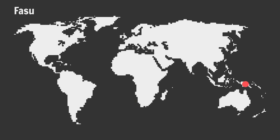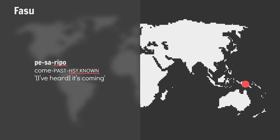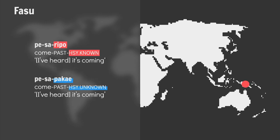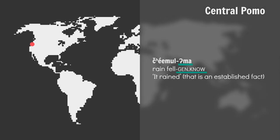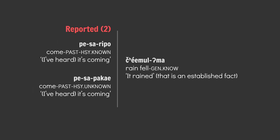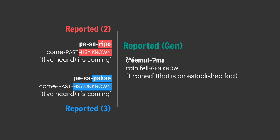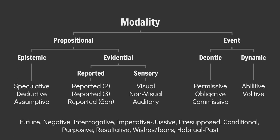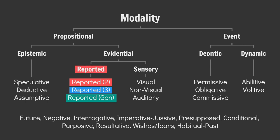In FASU, there's a distinction between whether the speaker's info came from a known source or an unknown source. Similarly, in Central Pomo, a speaker can use general knowledge or established fact to support their claims. These are examples of reported 2, reported 3, and reported gen modality: second-hand evidence (hearsay from a known source), third-hand evidence (hearsay from an unknown source), and evidence from folklore, established oral traditions, and general knowledge. All of these are subtypes of reported modality.